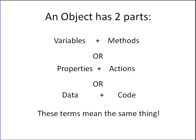and actions, which basically mean the same thing as variables and methods. In real simple terms, an object contains data or information and executable code.